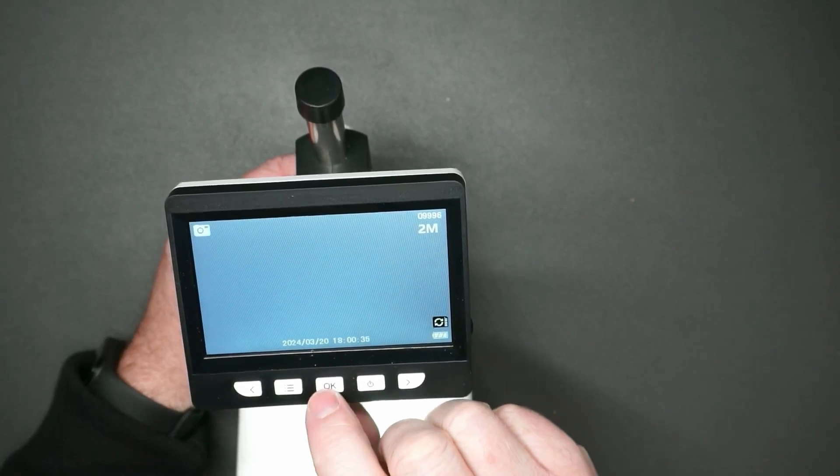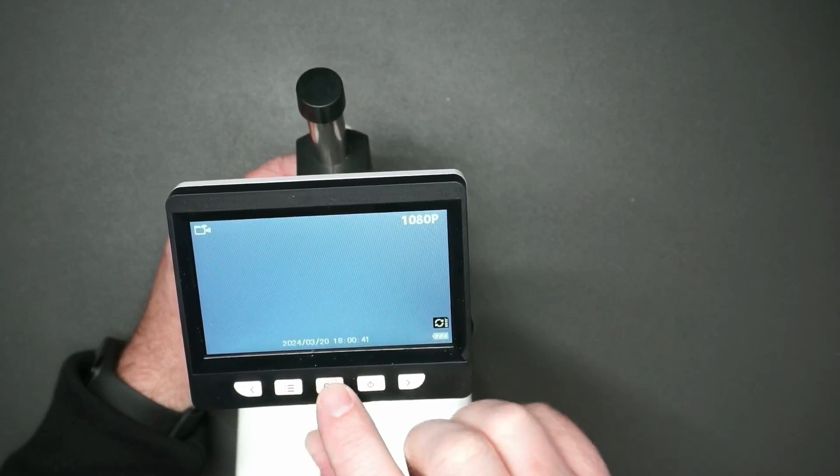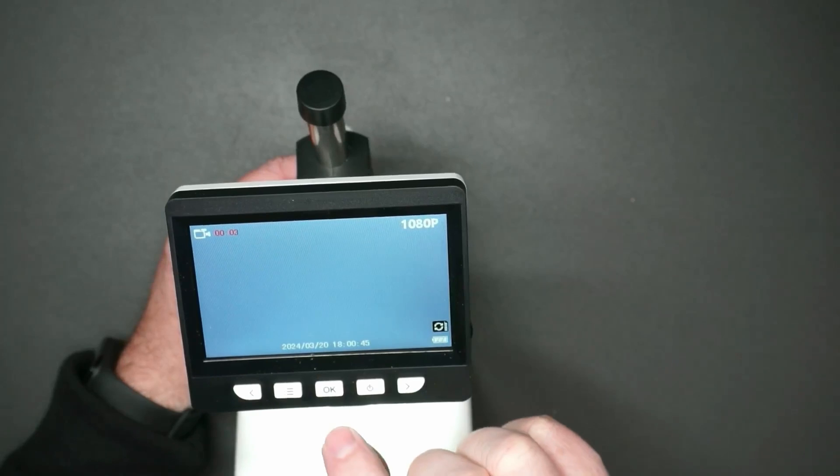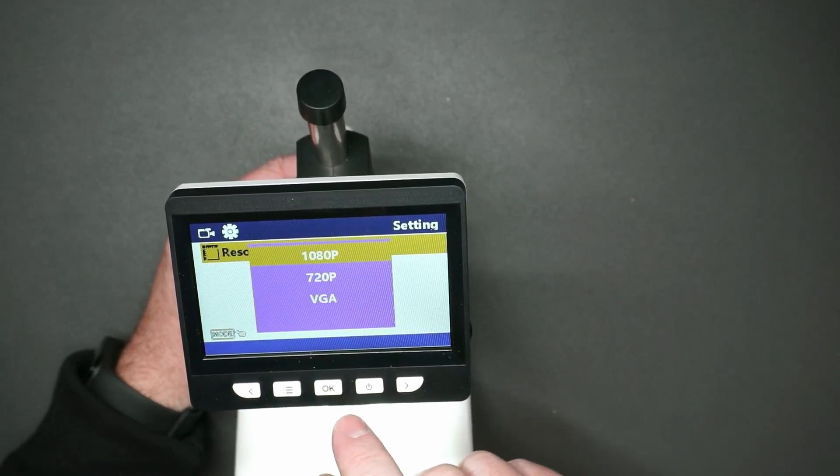When you turn this on, if you press the OK button it will take a photo. If you want to take a video you press and hold the OK button, that changes it into video mode. Press the OK button again and you'll start recording, press it again to stop.